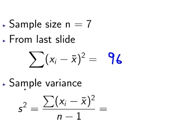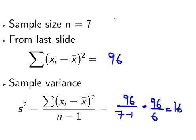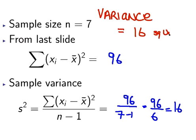This is the formula for sample variance. Now we have it all put together. We have 96 divided by n minus 1, so that's 7 minus 1. That's 96 divided by 6, which gives us 16. So the variance is 16 square units.